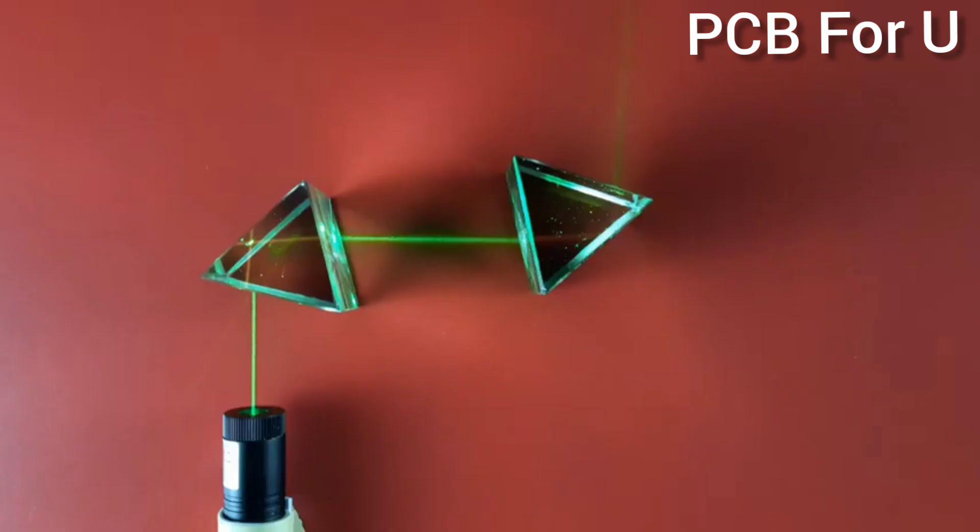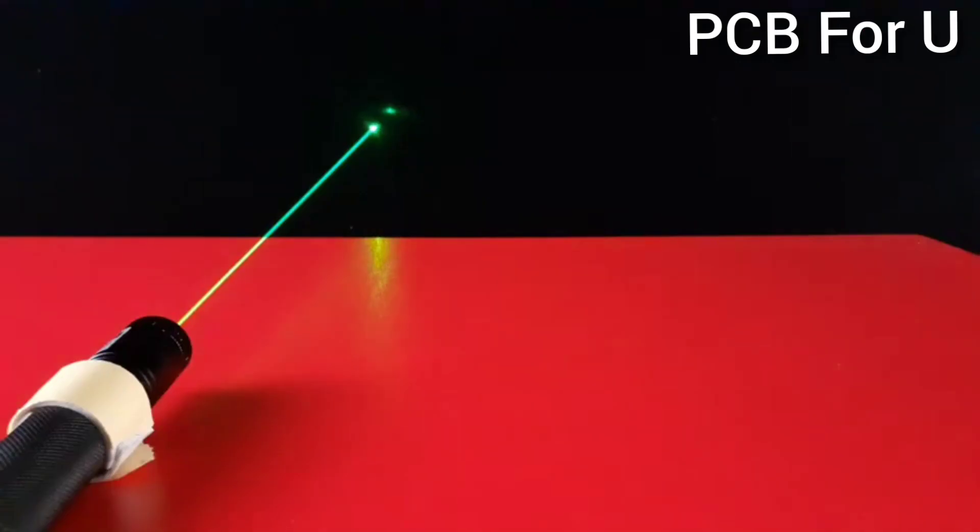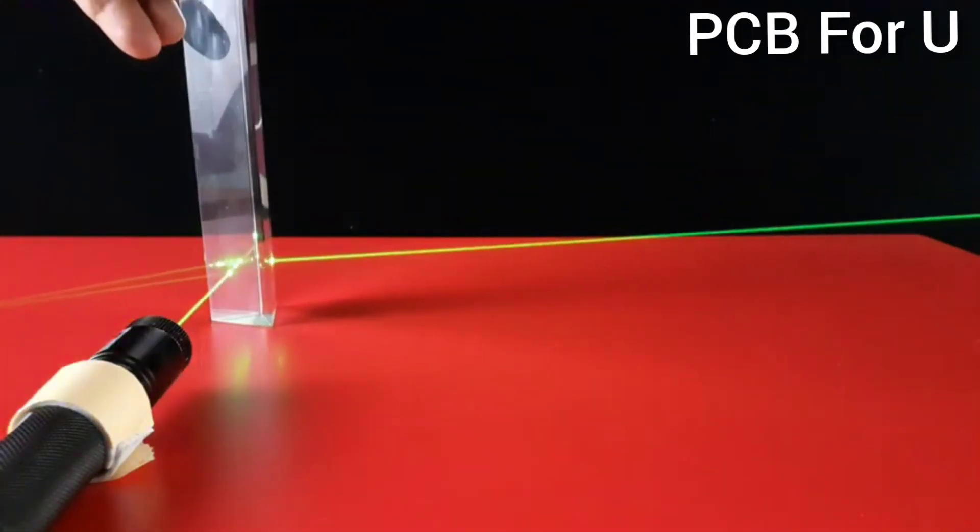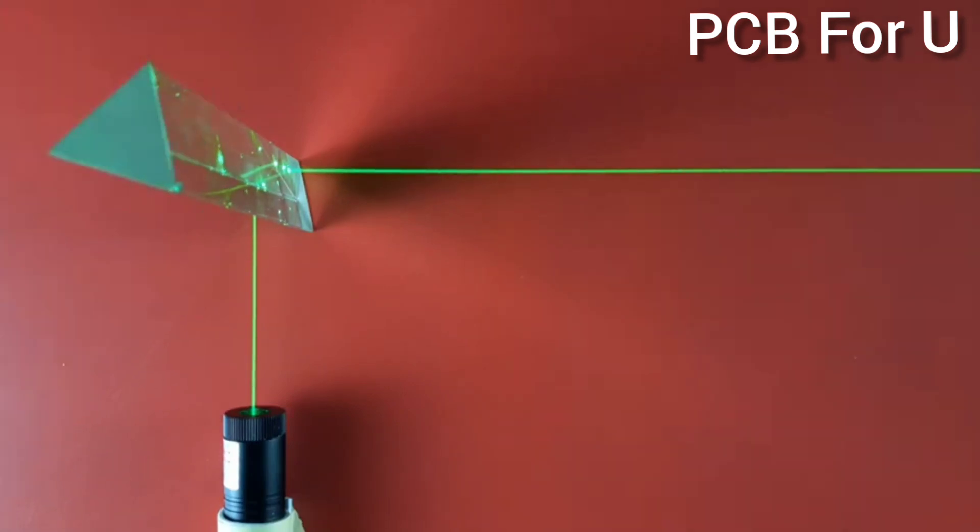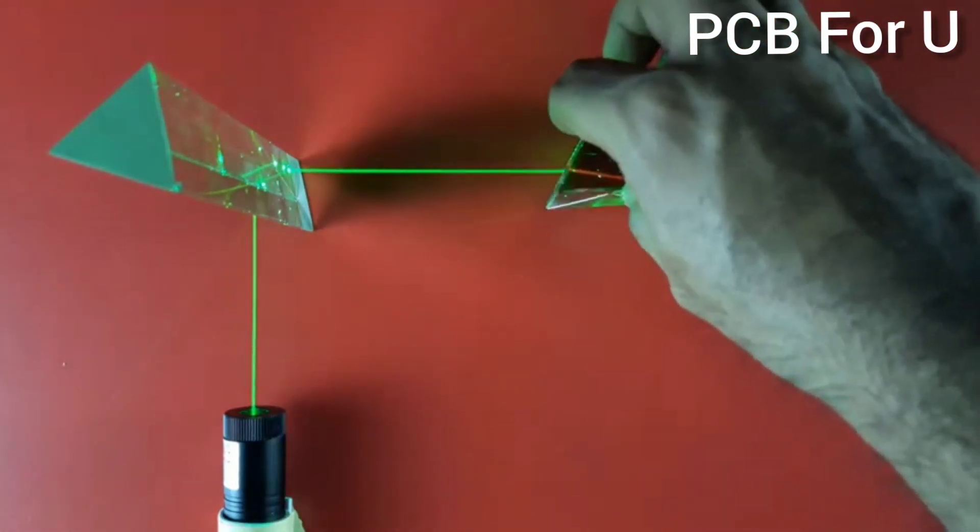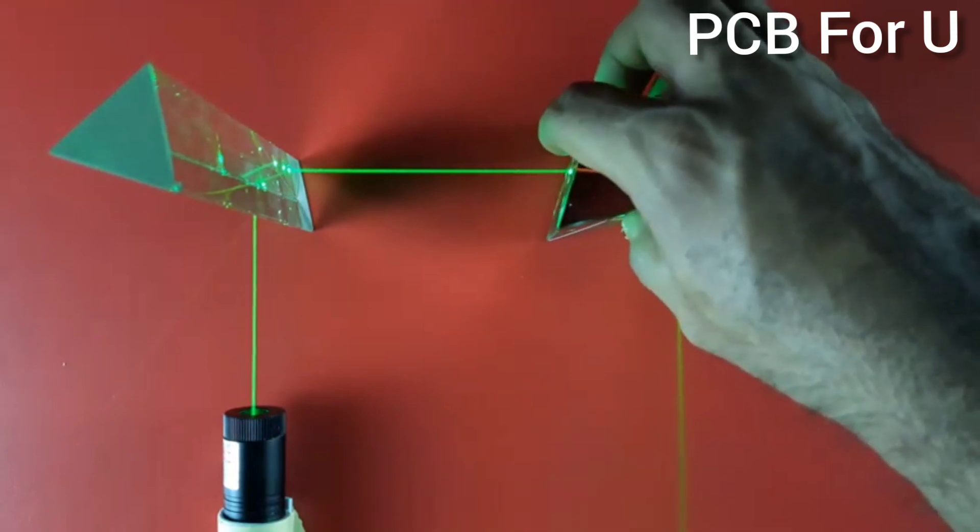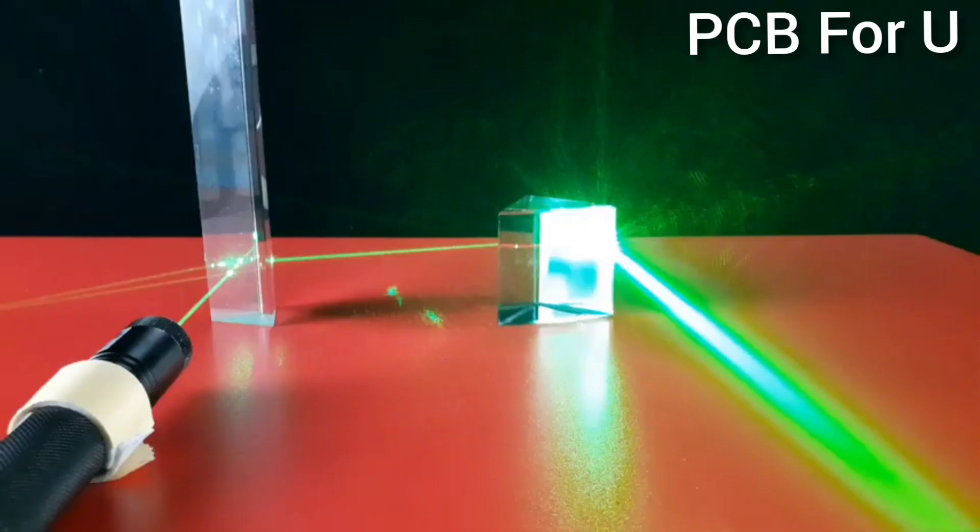How the rays are deviated from the original path. See with the help of prism. So now we are going to see 90 degree total reflection with the help of three prisms.